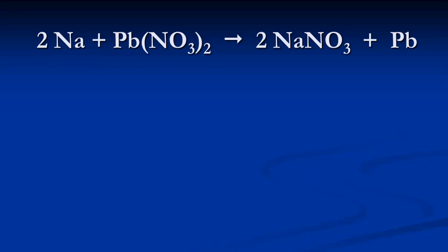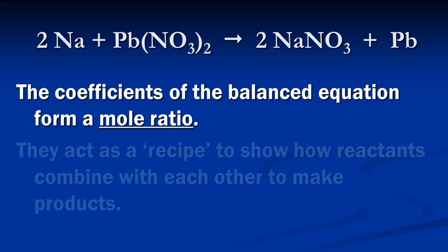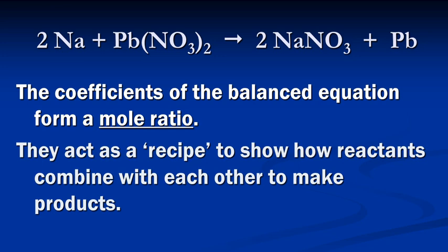In this lesson we're going to learn how balanced chemical equations help us to understand that there are ratios between the reactants and the products. In this equation we see that it is balanced, and if we look at the coefficients, these coefficients of the balanced equation form what's called a mole ratio. These substances — these reactants and products — are acting kind of like a recipe to show how reactants combine with each other to make products.